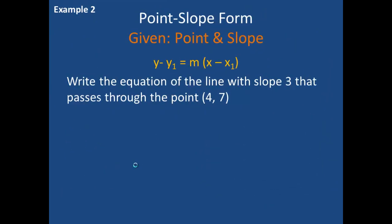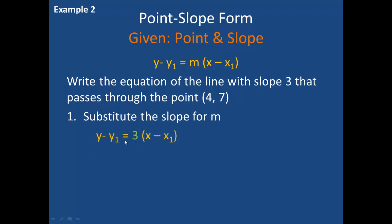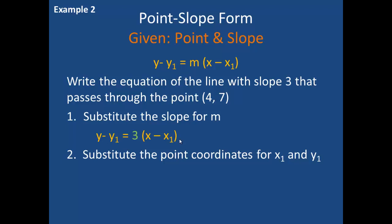In this next example I am asked to write the equation of a line with slope 3 that passes through the point. There are two steps. The first step is to substitute the slope for m, so my equation becomes y minus y1 equals 3 times x minus x1. My next step is to substitute the point coordinates for x1 and y1, giving me y minus 7 equals 3 times, in parentheses, x minus 4. That is the point-slope form of that equation.